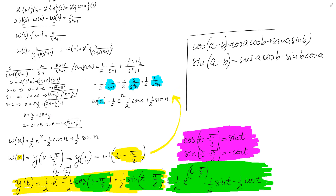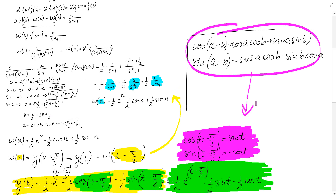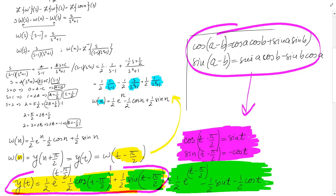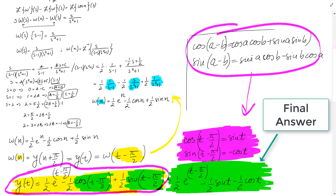Using trigonometric identities: cos(t minus pi over 2) equals sin(t), and sin(t minus pi over 2) equals negative cos(t). Replacing these in the equation, we get the final answer: y(t) equals one half e to the (t minus pi over 2) minus one half sin(t) minus one half cos(t) ... actually y(t) equals one half e to the (t minus pi over 2) minus one half sin(t), with the cosine of t minus pi over 2 becoming sine of t.